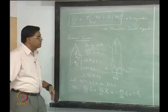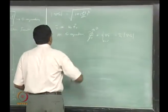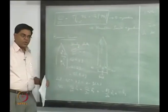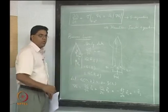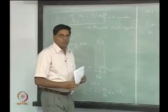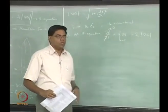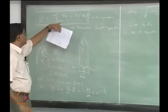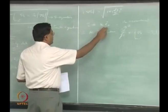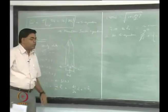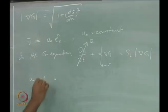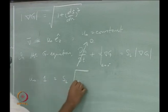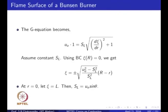U0 is treated as a constant for now — we will think about the velocity profile for a fully developed flow later. Since V has only a Z component U0, when taking the dot product V · grad G, we only worry about the Z component. So we get U0 times 1 equals SL times the square root of 1 plus (dZeta/dR) squared.